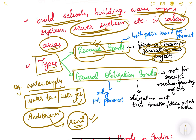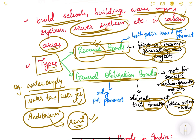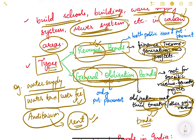General obligation bonds are not for any specific revenue-generating projects. They can be for repair and maintenance or new projects, but it is not necessary that they are for revenue-generating activities. The obligations are met through taxation or other project revenue — for example, trade license taxes, user fees, or income from other ongoing municipal projects. Whatever income the municipality gets from other sources is used to meet the obligations of these bonds.